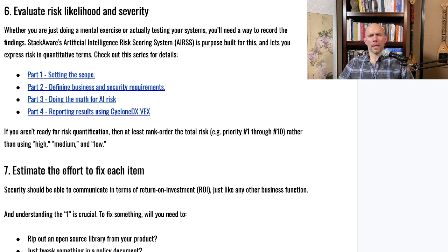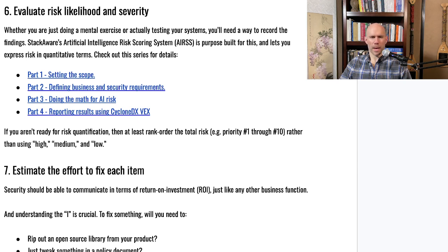The next step is evaluating the difficulty of fixing the risks you've identified. Since the goal is return on investment, understanding the impact of resolving a given issue is key. For example, ripping out an open source library embedded in a product will cause a lot of engineering churn — that's a high-impact fix. Lower-impact fixes might include modifying a policy document, although you'll need to train everyone on those changes, otherwise the policy will just sit on a shelf unused.